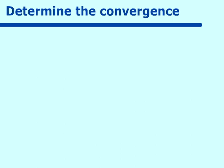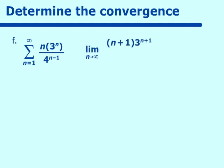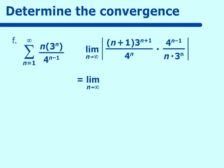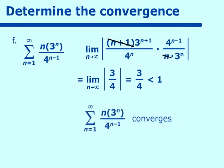How about n times 3ⁿ over 4^(n-1)? Using the ratio test: (n+1) and n simplify to 1 in the limit; 3^(n+1) over 3ⁿ gives 3 in the numerator; 4^(n-1) over 4ⁿ gives 1/4 in the denominator. Evaluating gives 3/4, which is less than 1 — the series converges. This is surprising since n multiplies the geometric series, but the ratio test confirms convergence.